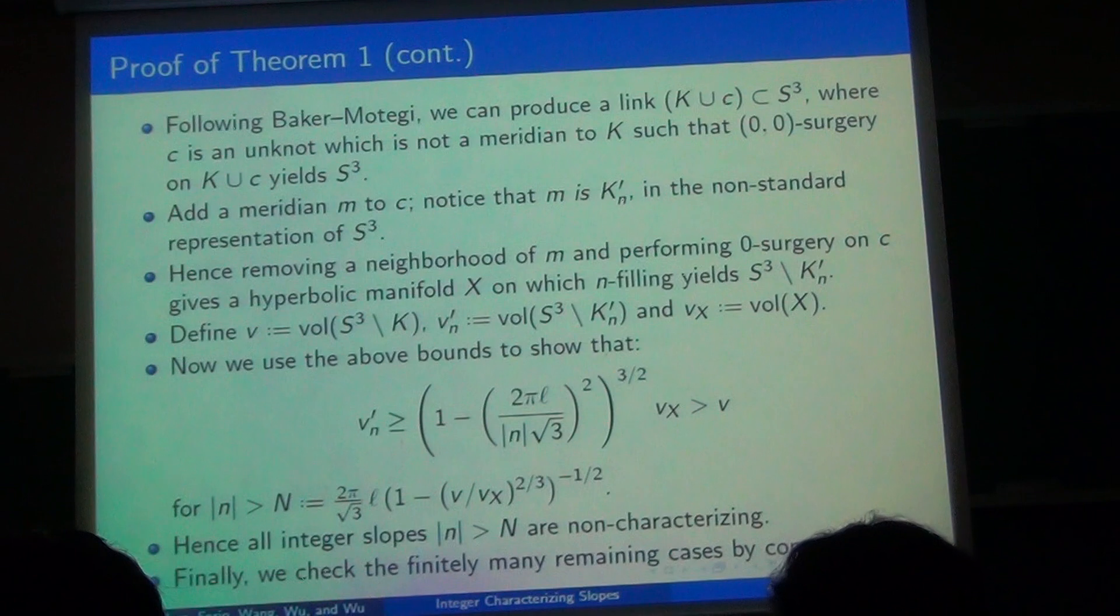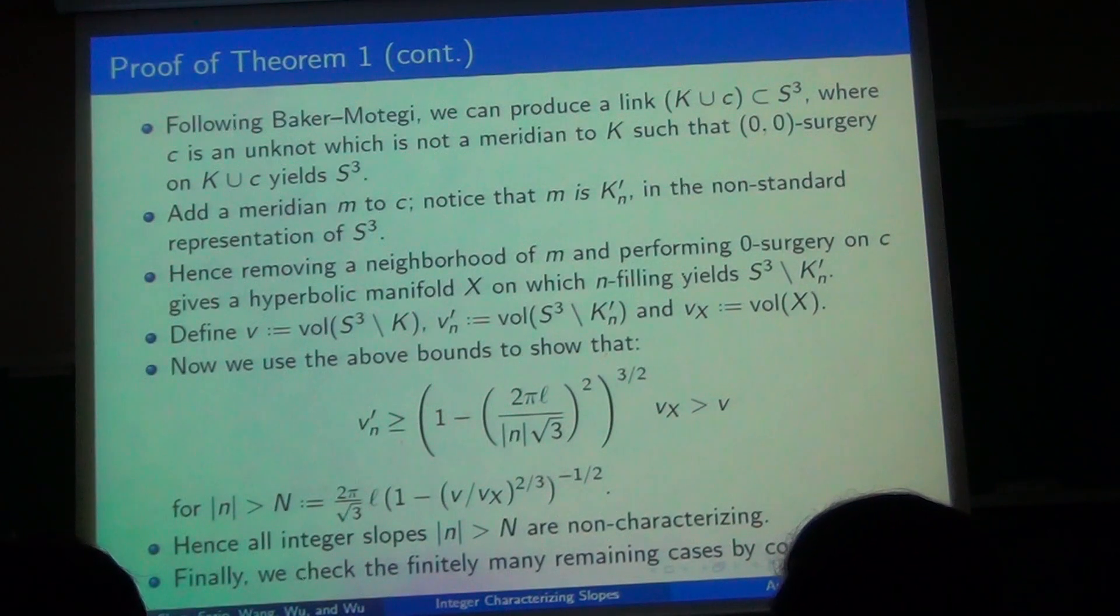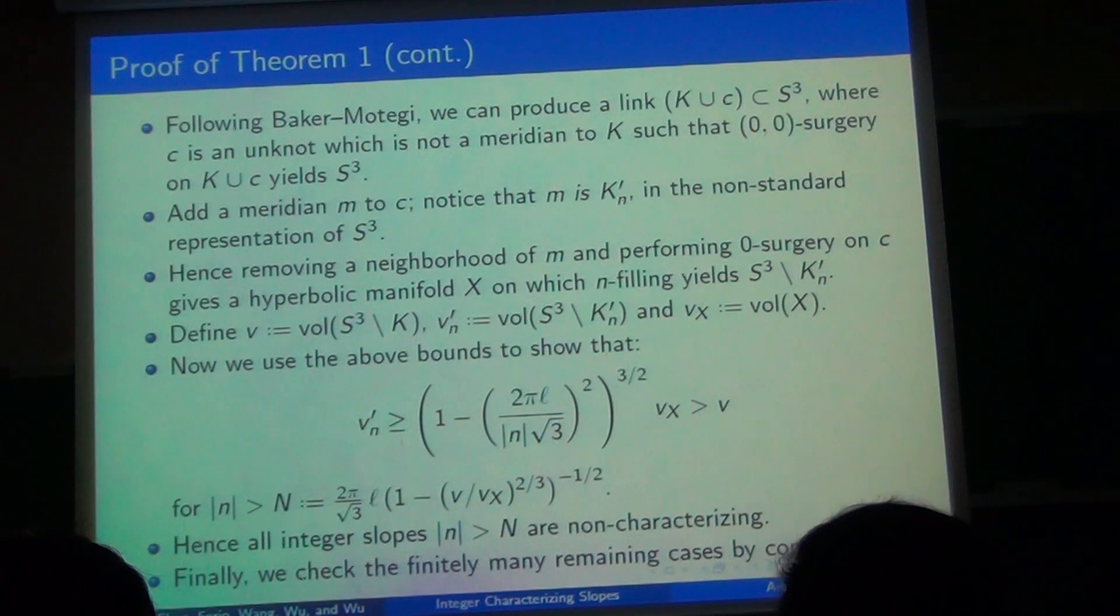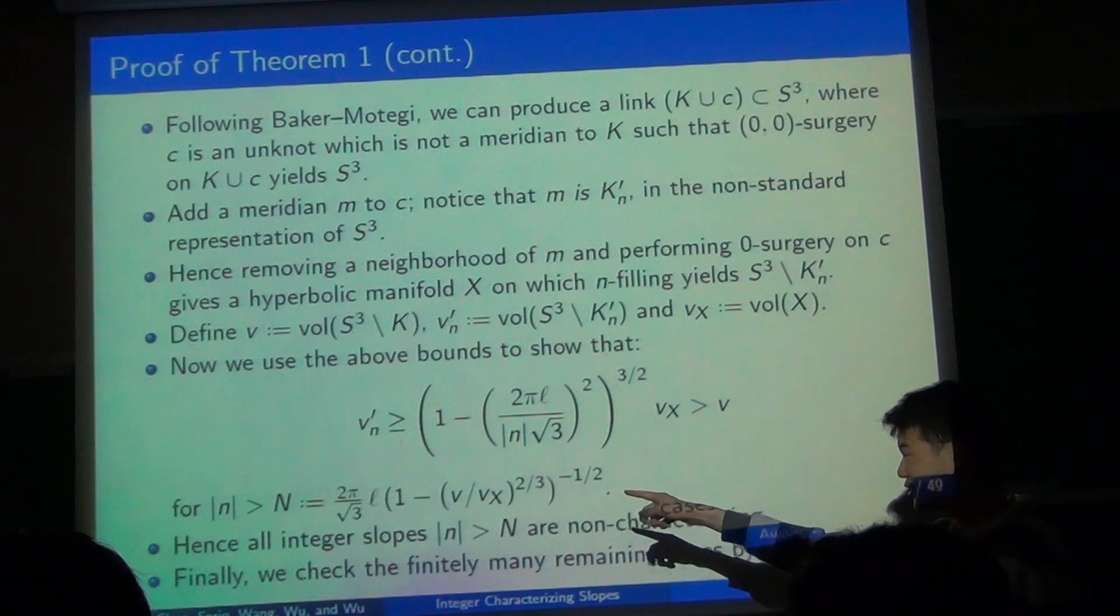So if we have a knot K, we find a knot C linked to K that yields S³ when you do zero-zero surgery. So now we notice that if we add a meridian M to C, then the surgery dual of M is just K_n prime, the knot that has the same n surgery as K. And so that construction fits all the theorems that we just showed. And so what we want to show is that K_n prime is distinct from K. One strategy is that we can show that their volumes are different, then they have to be different.